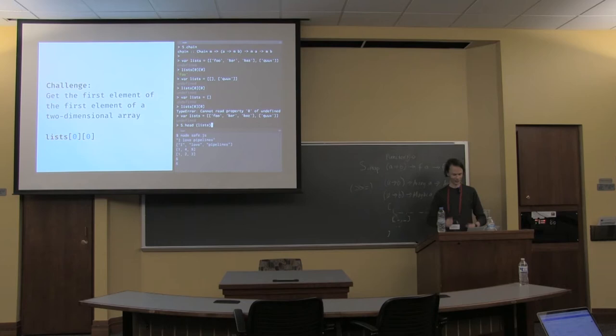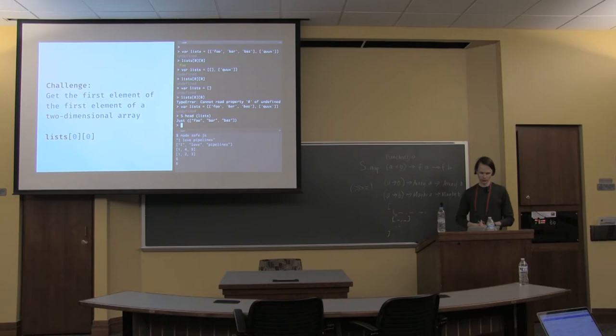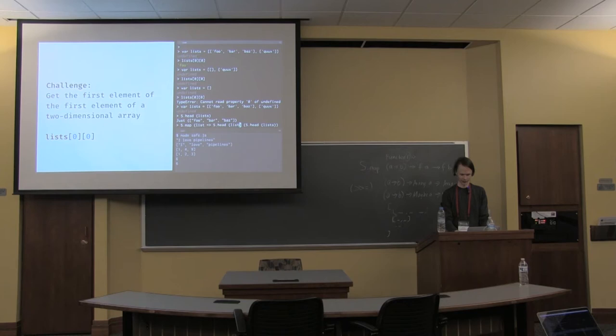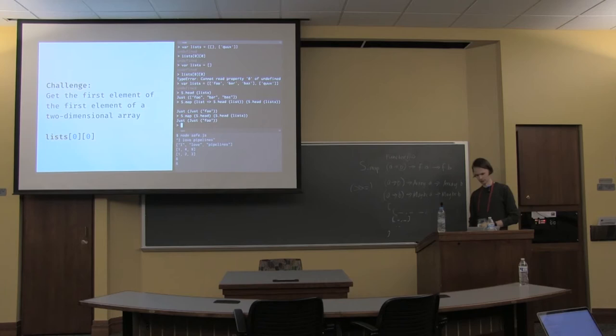Taking head of the list should give us just 'foobar'. How do we perform operations on a Maybe? We can map. This function is going to receive one list as an argument and take the head of that list. This is unnecessary function wrapping, so we can simplify that to map head over the head of the list.